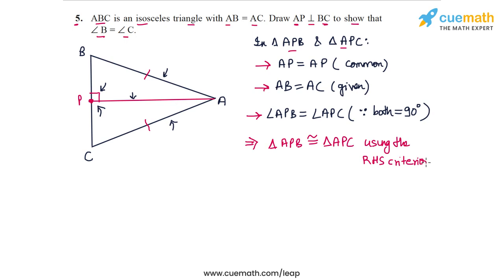Because these two triangles are congruent, all their corresponding parts must be equal. In particular, angle B must be equal to angle C. Using corresponding parts of congruent triangles, angle B equals angle C. This completes our proof.